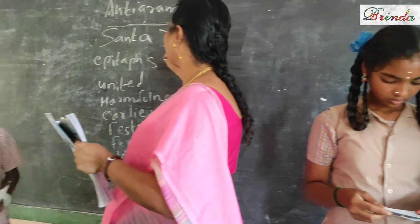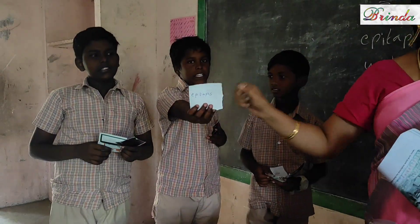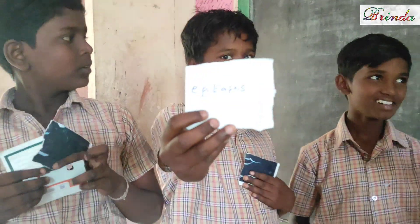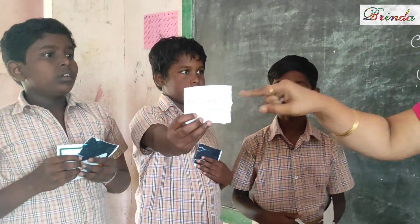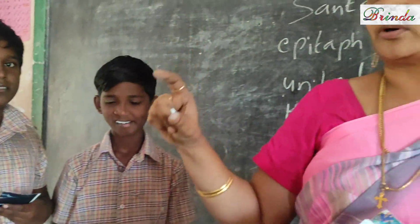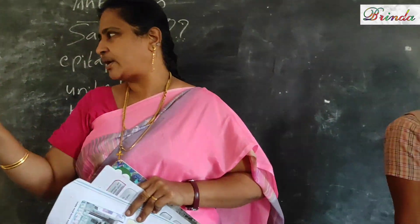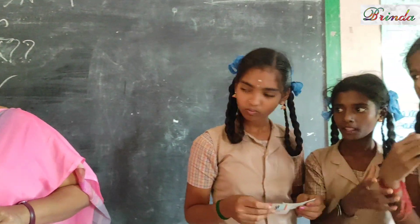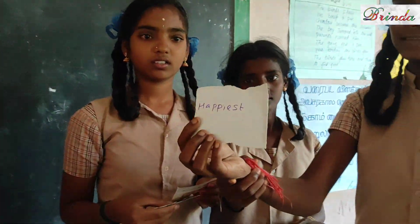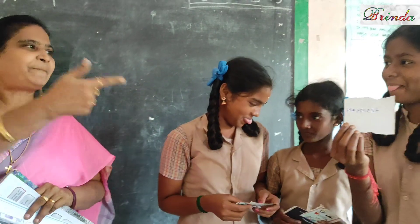Next one: epitaph. Epitaph means the words written on the tombstone. So epitaph — what is the opposite word? The answer is 'happiest.' So epitaph is sad, and happiest is the opposite.